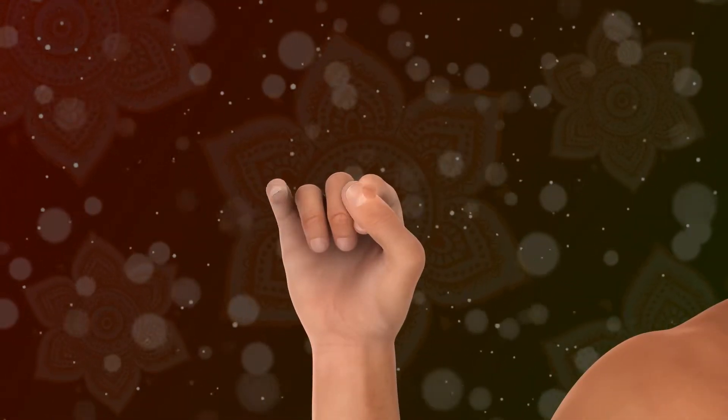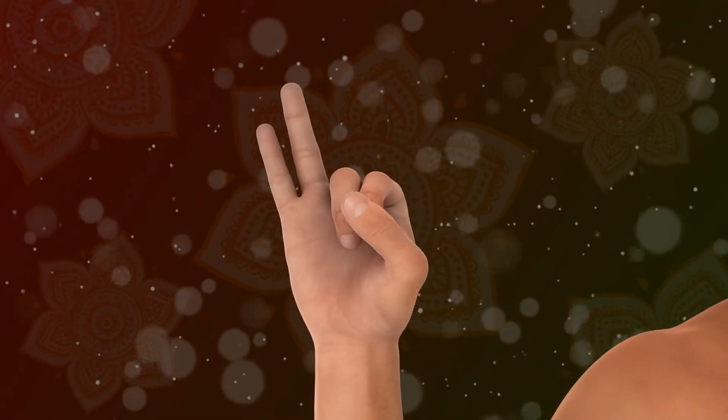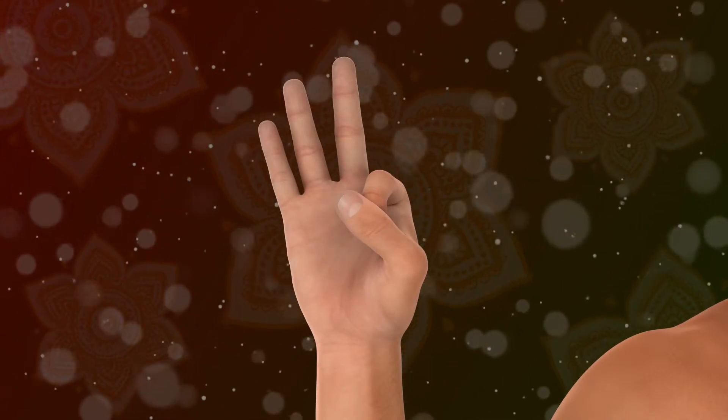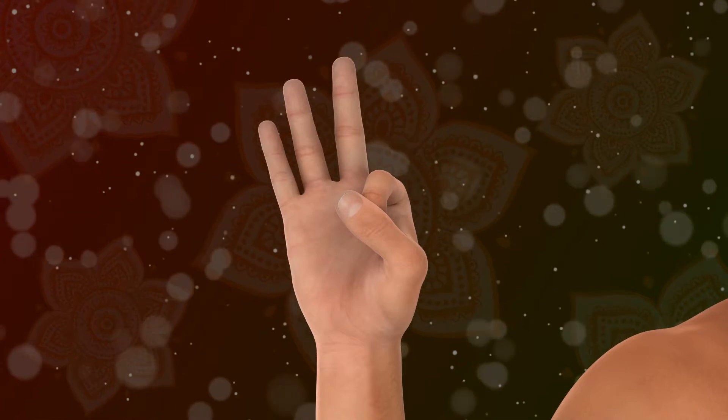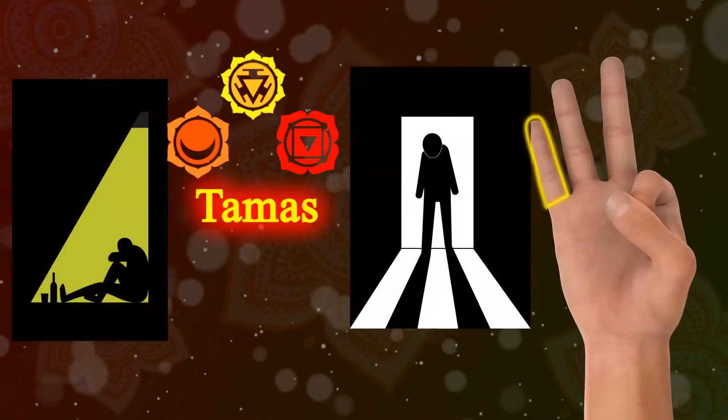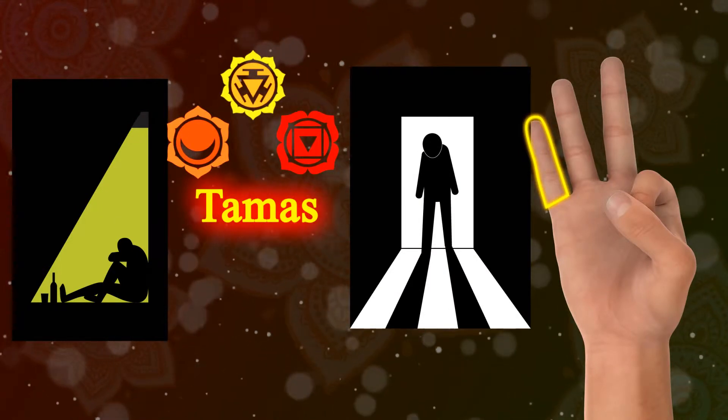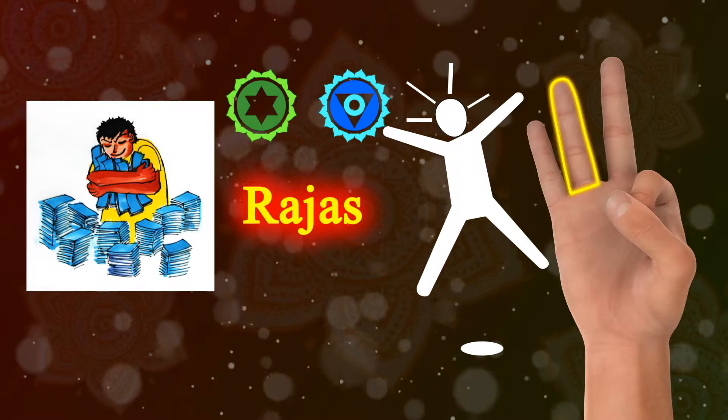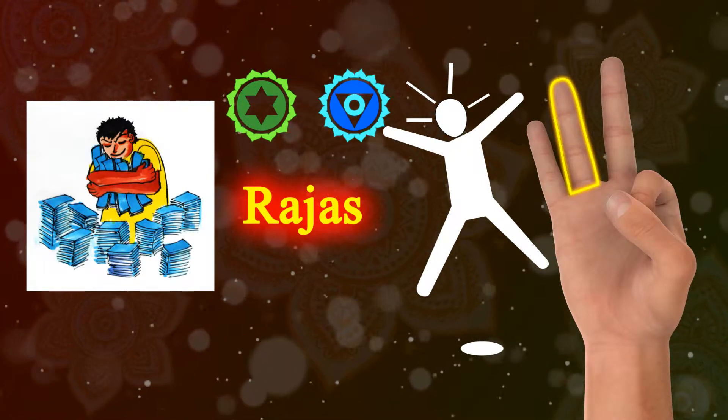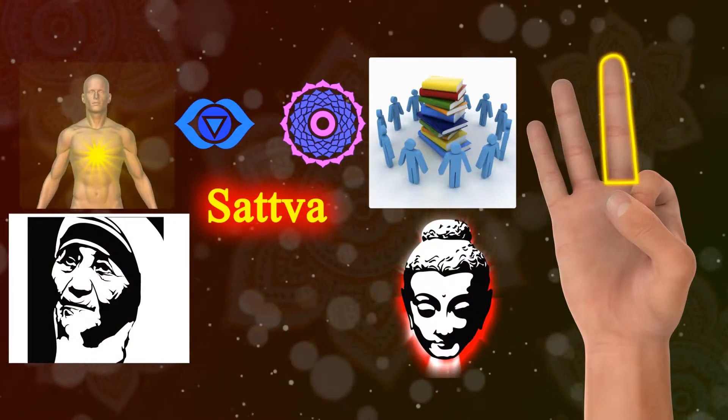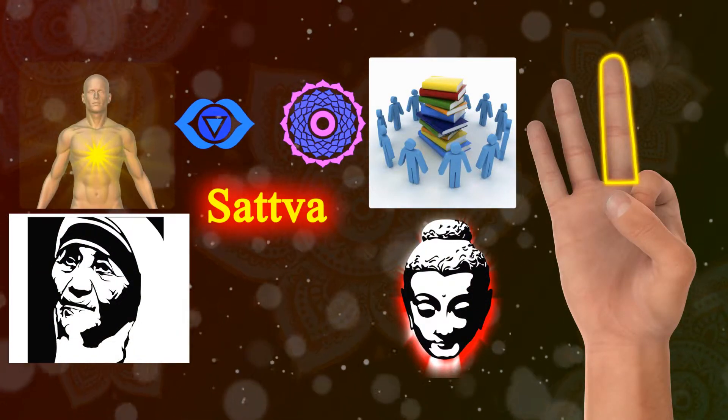Symbolically, the ring and middle fingers represent the three Gunas or qualities of nature, which are Tamas, known as Inertia, Rajas, known as Activity or Creativity, and Sattva, known as Luminosity and Harmony.